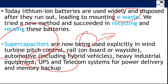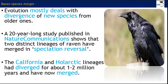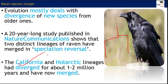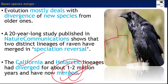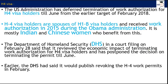A small but interesting evolutionary update: the Californian raven and the Holarctic raven were two different species about 1–2 million years ago, but they have now merged into one. This is an unusual case of species convergence rather than the typical divergence in evolution. Keep this in mind just in case it comes up.